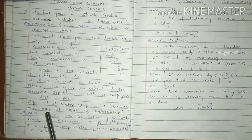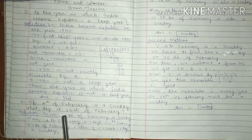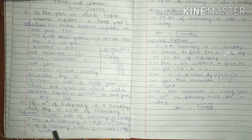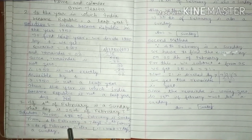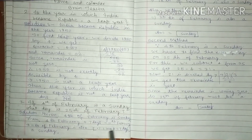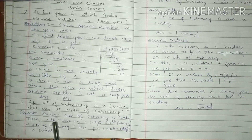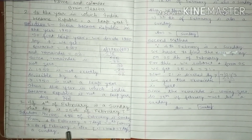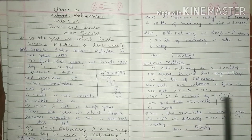If 4th of February is a Sunday, what day is 25th of February? For the solution, given 4th of February is Sunday, then 4th February plus 7 days equals 11th February, since 1 week equals 7 days. This implies that 11th February is also a Sunday.